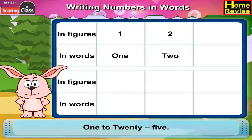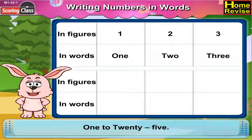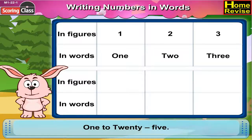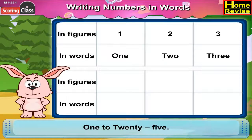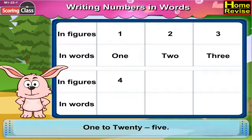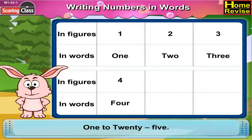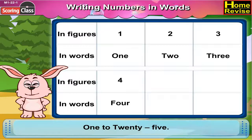3 in words is T, H, R, E, E. In figure it is like this. 4 in words is F, O, U, R. In figure it is like this.